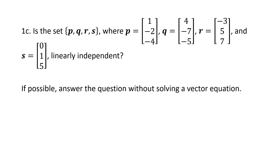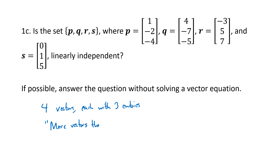Now we have more than two vectors, but we have another shortcut: we have a set of four vectors all in R3, meaning four vectors each with three entries. We have a theorem about having more vectors than entries, which tells us this set is linearly dependent. Whenever a set of vectors has more vectors than entries, the set must be linearly dependent — I misspoke earlier and said independent, but it must be linearly dependent.